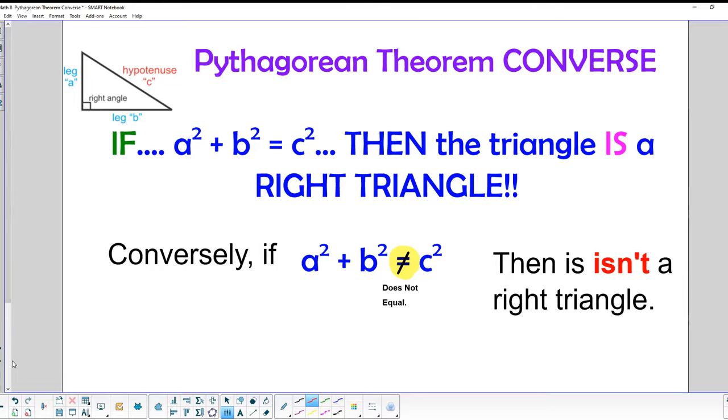So then we have what we call the converse of the Pythagorean theorem, which means that if I get three sides, if I square each of them, and the two smaller ones squared do not equal the larger ones squared, then I actually don't have a right triangle. So I can prove it in that way, and it's called the converse of the Pythagorean theorem.